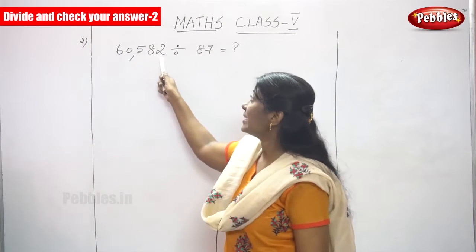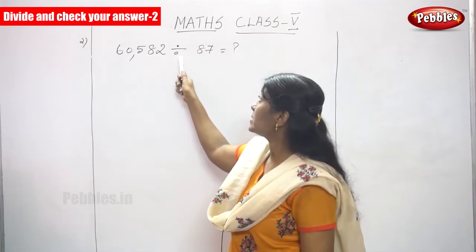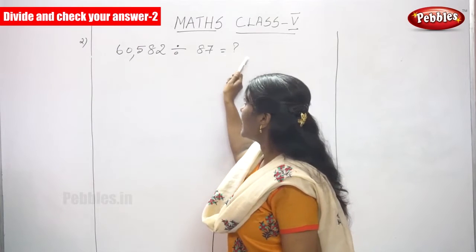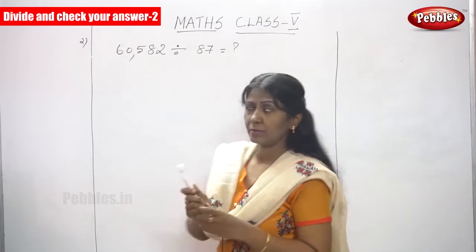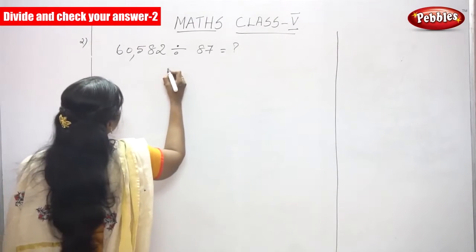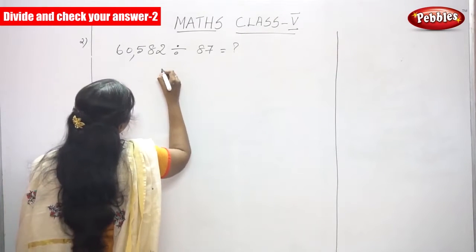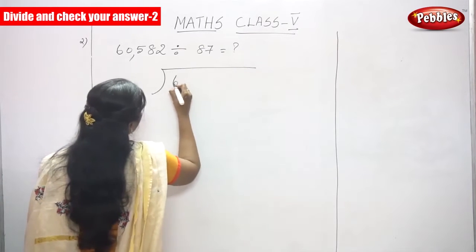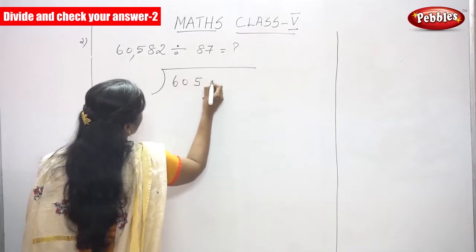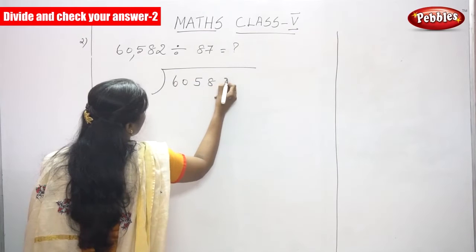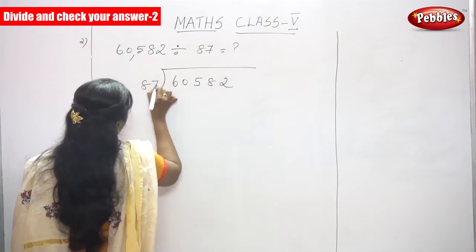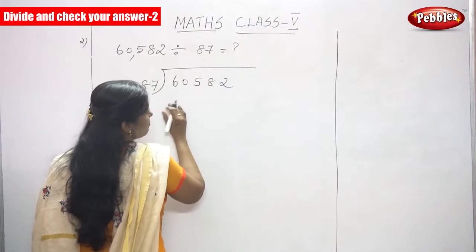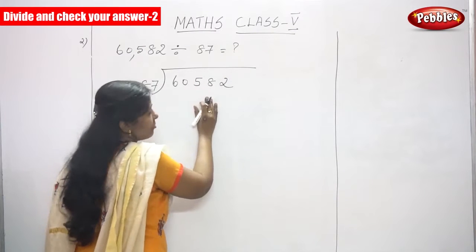60,582 is divided by 87. Find out the answer. Let's start the sum. Before you are going to start the division, write the place value.